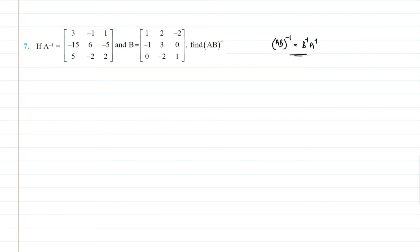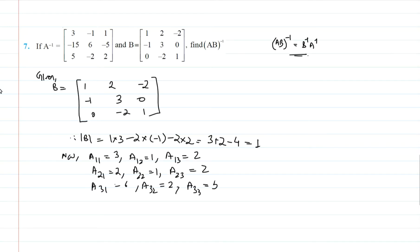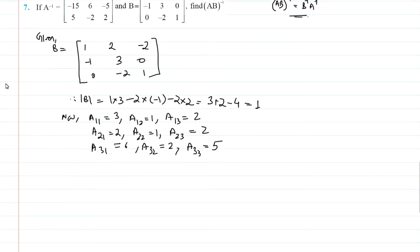I have A inverse, so I need to find just B inverse and multiply it with A inverse. So let's do it. B is given. Therefore determinant of B is equal to 1 times 3 minus 2 times -1, that is equal to 3 plus 2 minus 4, that is equal to 1.